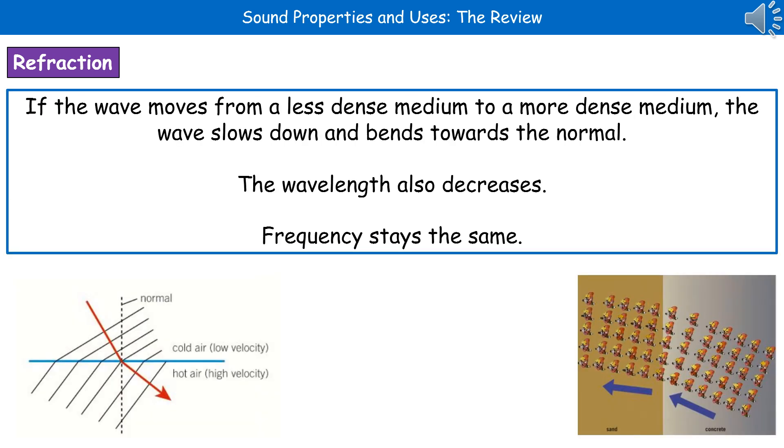If we consider refraction in more detail, what we find is that if our wave is moving from a less dense medium like air into a more dense medium like water, then the wave is going to slow down. And as it does so, assuming it's hit at an angle, it's going to bend towards the normal. Hopefully we remember that the normal is that line at 90 degrees to the surface. What we'll find as a result of this is that the actual wave is going to bend.